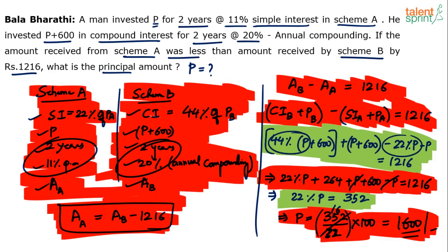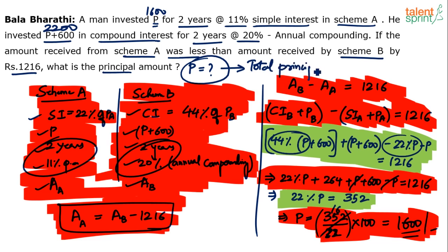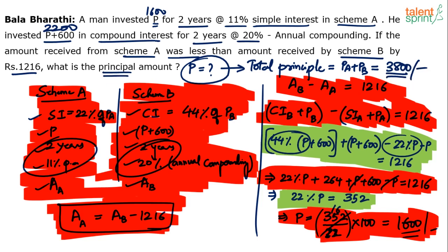Good point raised: the question asks for 'the principal amount' but isn't explicit about which one. If it refers to P, the answer is 1600. P plus 600 would be 2200. If it refers to total principal (PA plus PB), that would be 1600 plus 2200 equals 3800. Depending on the answer options, we choose accordingly.